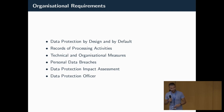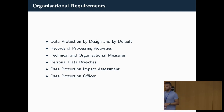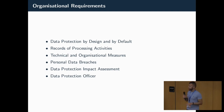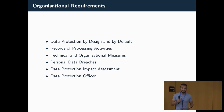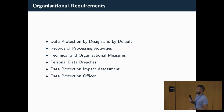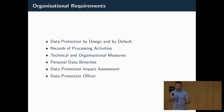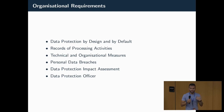Article 32, titled Security of Processing, obliges both controllers and processors to implement appropriate technical and organizational measures to ensure the ongoing confidentiality, integrity, and availability of personal data. Generally the GDPR does not recommend particular measures, with a few exceptions such as encryption and pseudonymization. It is up to organizations themselves to determine what measures need to be implemented and what needs to be avoided.